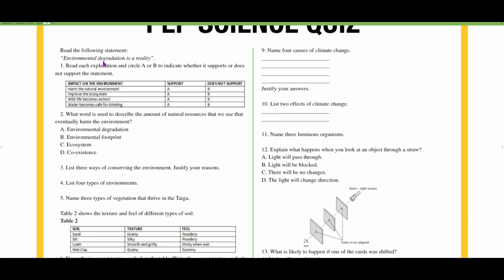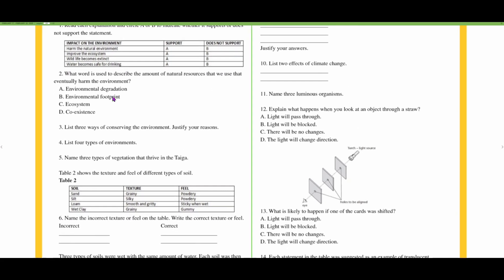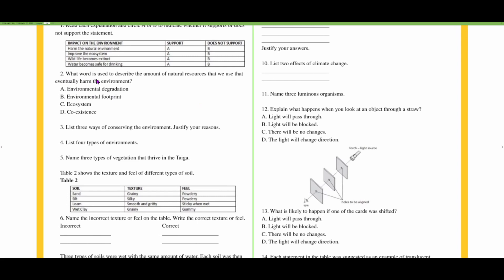For example, if we cut down trees, then wildlife could go extinct because we have habitat being removed. Water becomes safe for drinking would not support. Number two: what word is used to describe the amount of natural resources that we use that eventually harm the environment? The environmental footprint is what we would use to describe that.